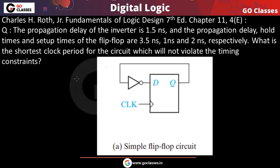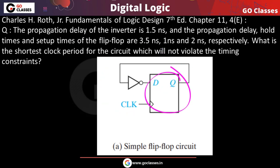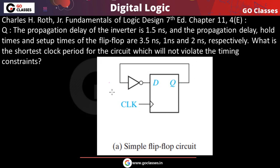This is the exercise. The circuit given has a D flip-flop which is positive-edge triggered. The output of the D flip-flop is the input of an inverter, and the output of the inverter is the input of the D flip-flop. The propagation delay of the inverter is 1.5 nanoseconds. The propagation delay, hold time, and setup time of the flip-flop are 3.5 nanoseconds, 1 nanosecond, and 2 nanoseconds respectively.